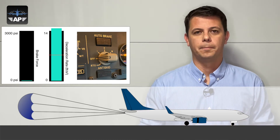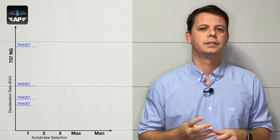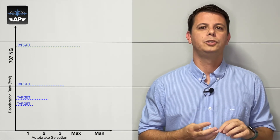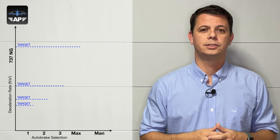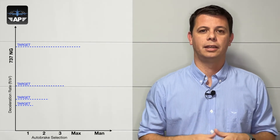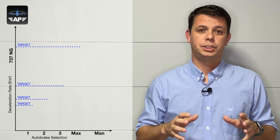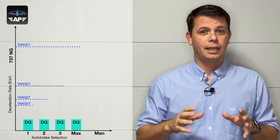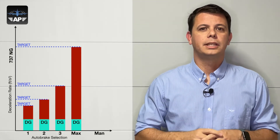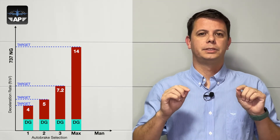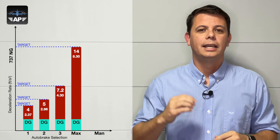The Boeing 737 NG has four different levels of autobrake: one, two, three, and maximum. On your right you'll see the deceleration rate targets for each level of the autobrake system. This deceleration level is reached by aerodynamic drag and a corresponding amount of brake pressure.